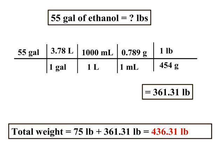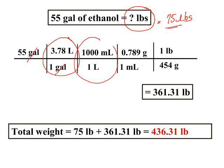55 gallons of ethanol is how many pounds? Because once we find the pounds of ethanol we'll be able to add it to the 75 pounds of the container. So taking our 55 gallons of ethanol, they gave us this conversion factor. One gallon is 3.78 liters. This is a conversion factor you need to know. 1 liter is 1000 milliliters.